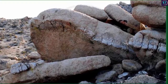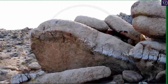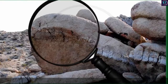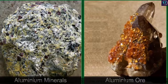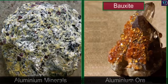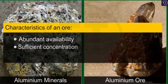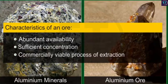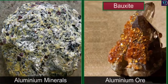If we start looking for minerals in the earth's crust, we will find them in some very interesting formations. It is interesting to know that aluminium is found in around 150 known minerals, but only one of them, bauxite, is majorly used to extract aluminium. Abundantly available minerals that offer sufficient concentration of an element and a commercially viable process of extraction are called ores of that element. Thus, bauxite is an ore of aluminium.